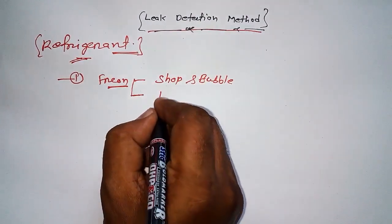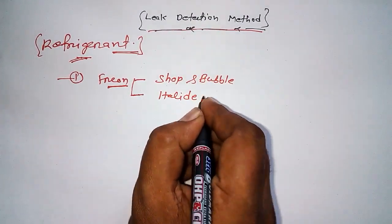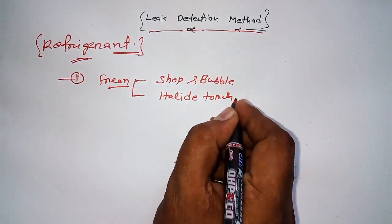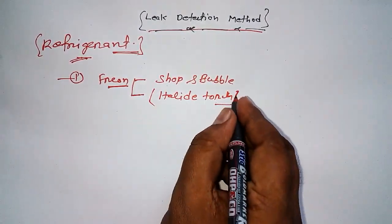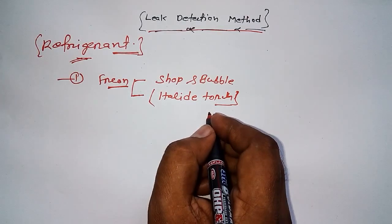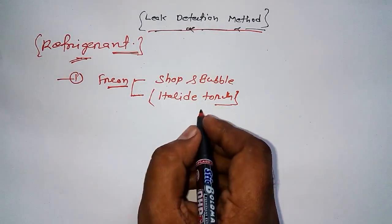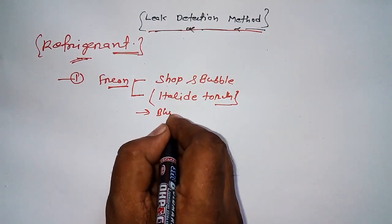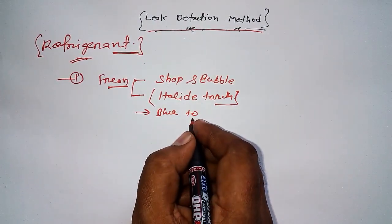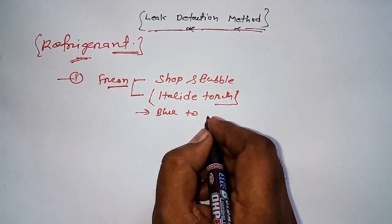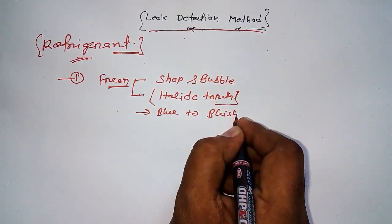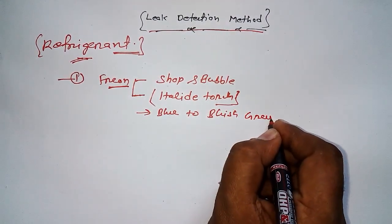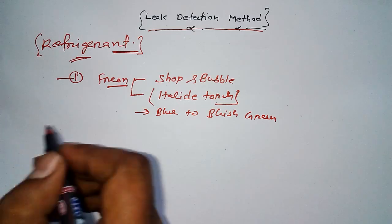Another method is halide torch. If you have a halide torch, then we can easily detect the leakage of freon because we get blue light. If leak is detected, then blue will be converted into bluish green. This is how we can detect freon refrigerant.